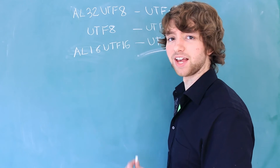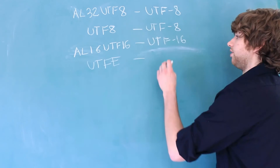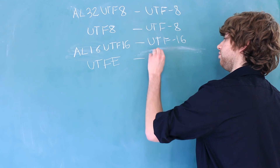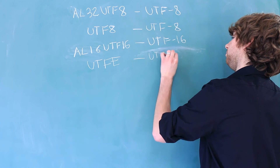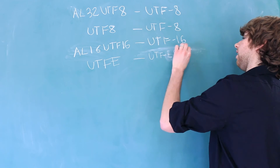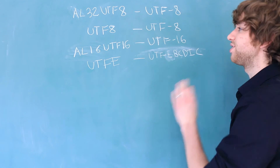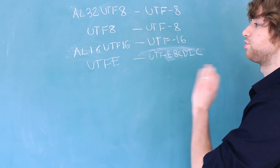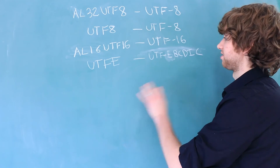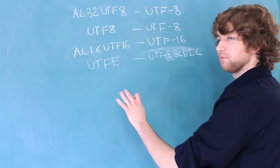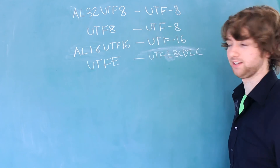There is a fourth character set known as UTFE. The encoding this one uses is known as UTFEBCDIC, and this one is super archaic. You're almost never going to want to use this, but I thought I would mention it in case you run across it, because there is a chance you might.